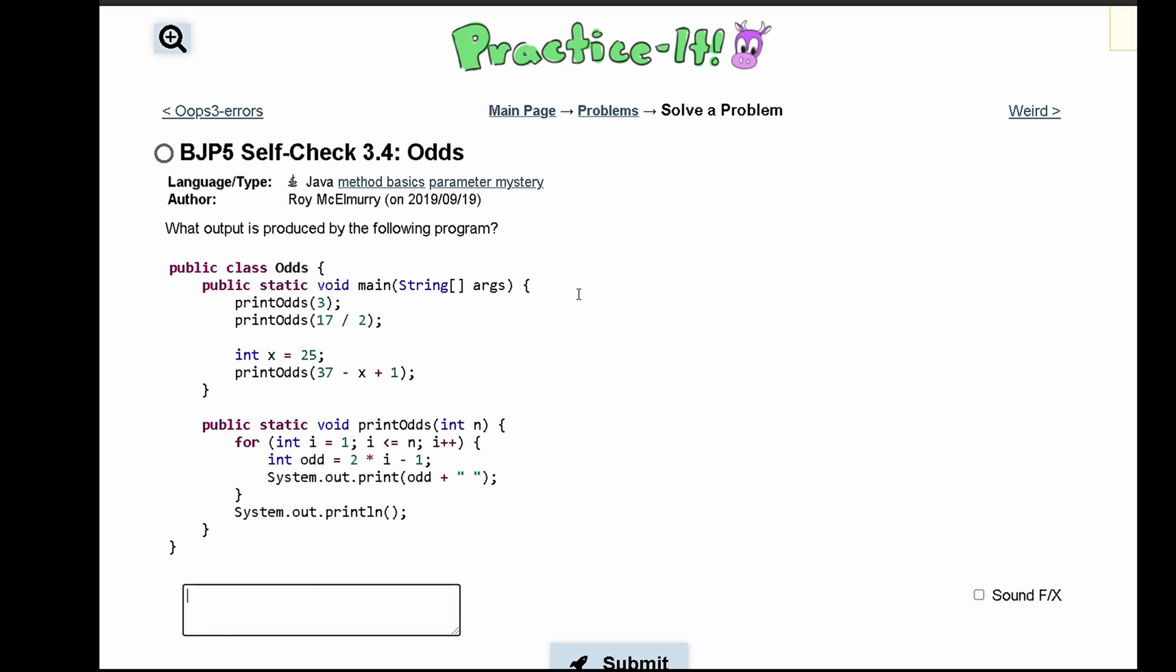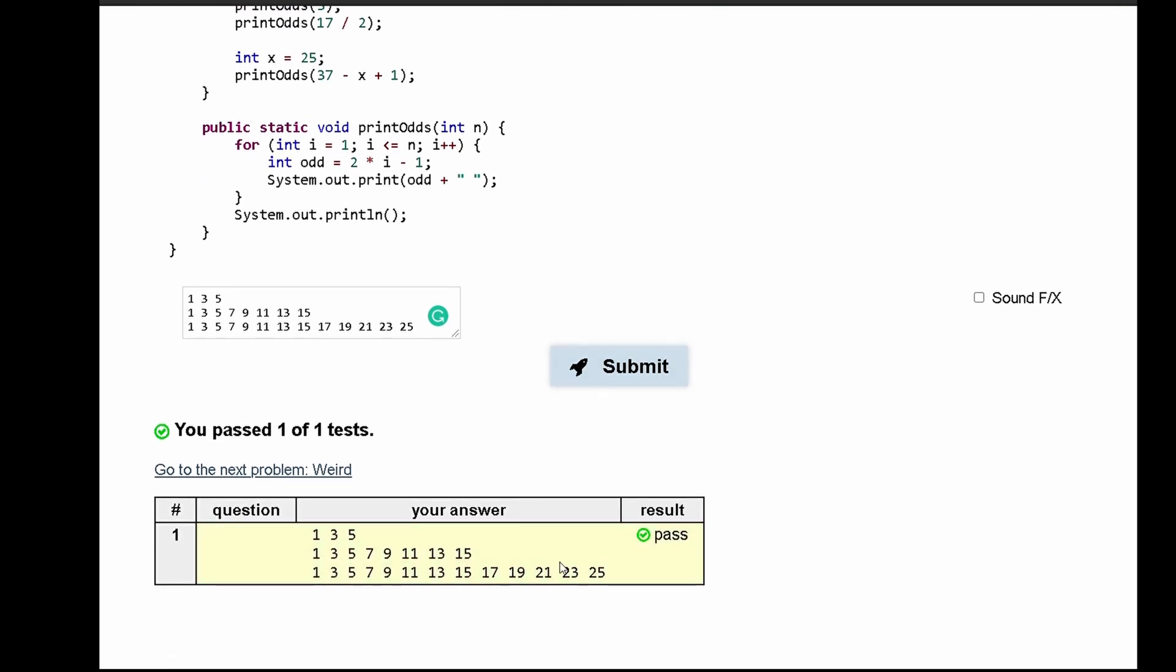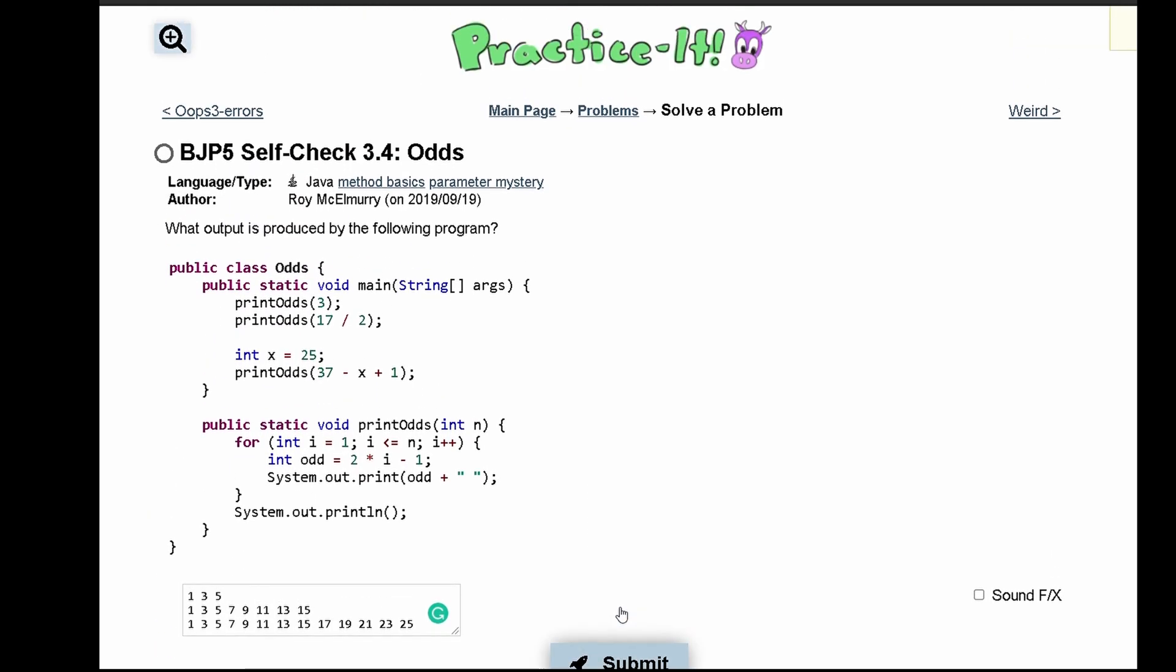Putting this into practice-it, we are going to have 1, 3, 5, and then we're going to have 1, 3, 5, 7, 9, 11, 13, 15, and then this is going to be 1, 3, 5, 7, 9, 11, 13, 15, 17, 19, 21, 23, and 25. And this is the same thing that we figured out on the drawing that we did. When we drew out the output, we can see that we passed this test and this is the output for this code.